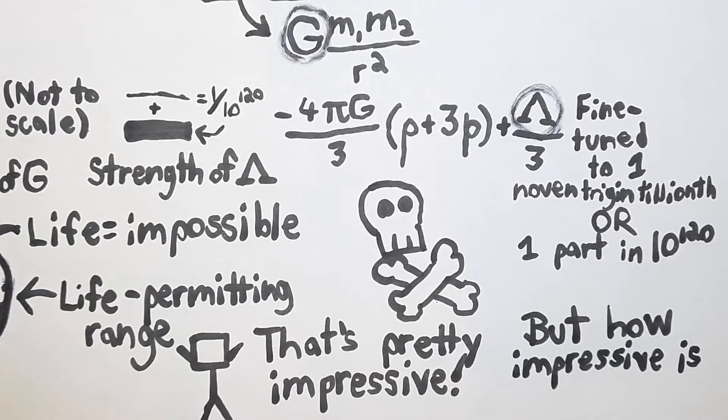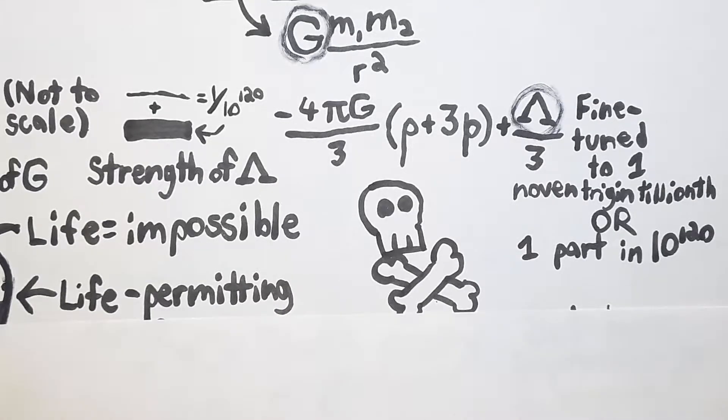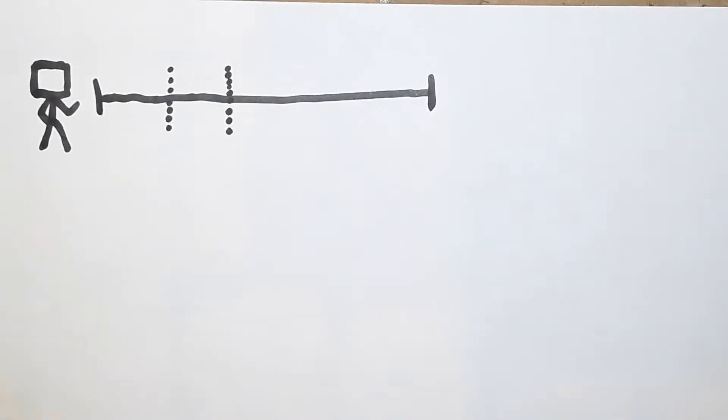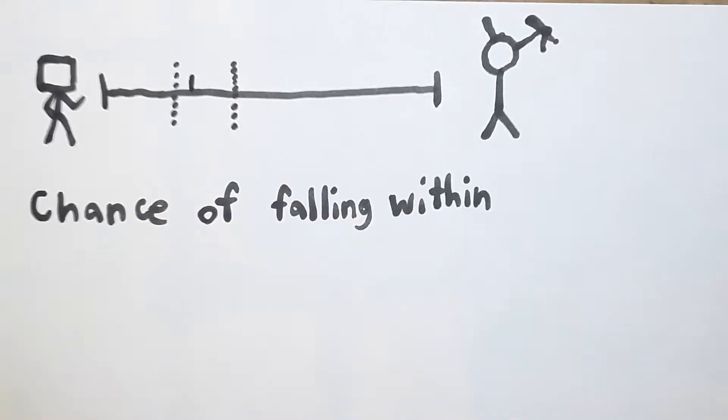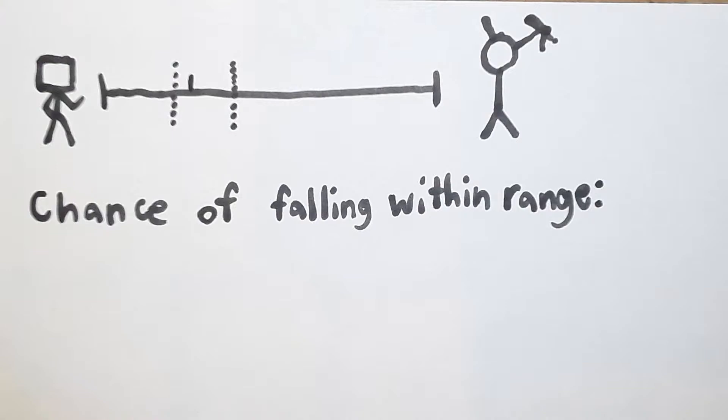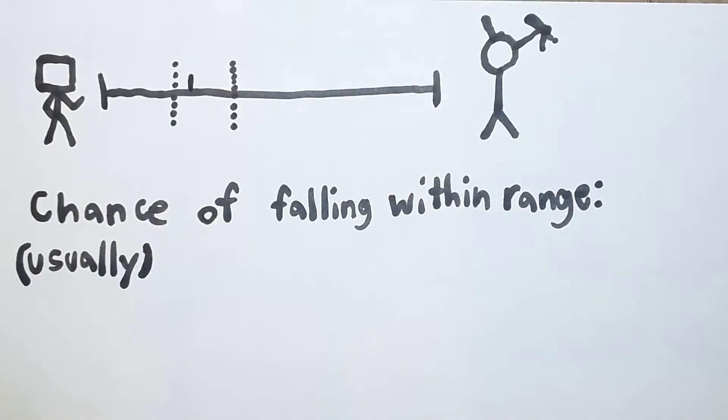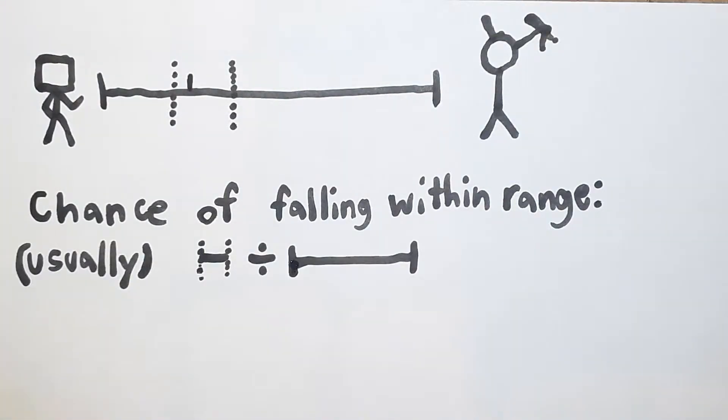That's pretty impressive but how impressive is it exactly? Well if there are a range of values and you were to pick a random value, say by shooting a dart at the range of possible values, the chance that would fall in that certain range, as long as certain conditions are met like every point being equally likely, the probability is the length of the certain range we're looking for divided by the range of all possible values.